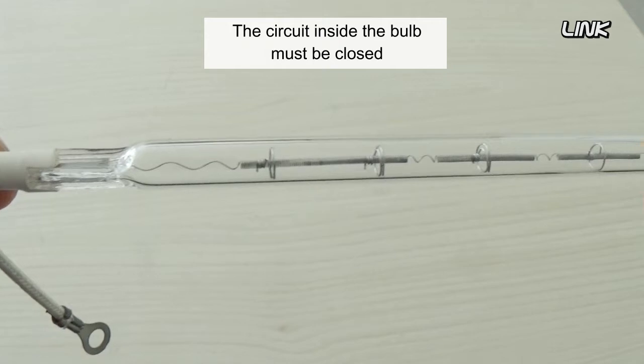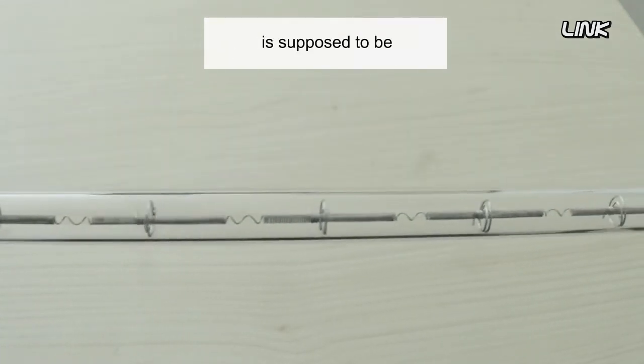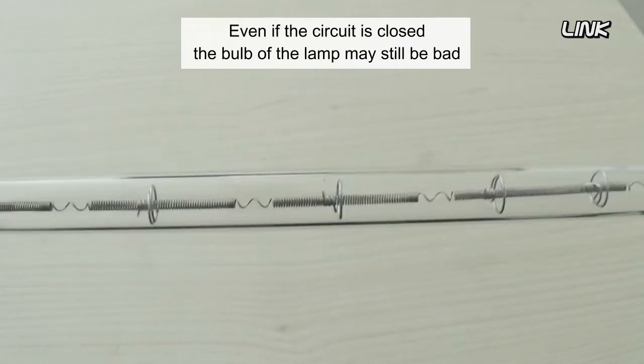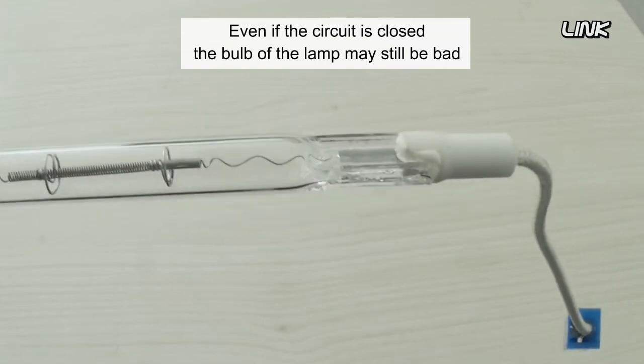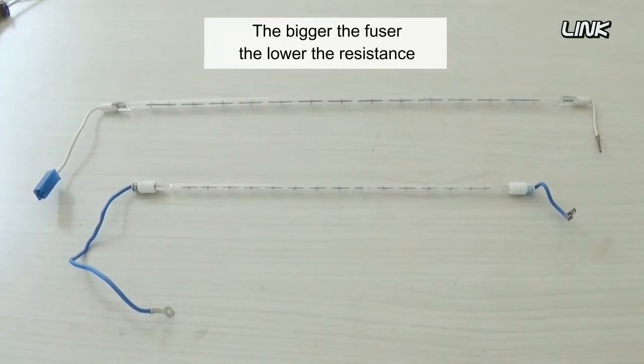The circuit inside the bulb must be closed, but you must know what the bulb's resistance is supposed to be. Even if the circuit is closed, the bulb may still be bad. It should give a reading of around 10 to 100 ohms - the bigger the fuser, the lower the resistance.